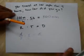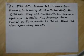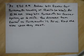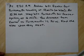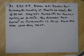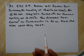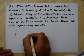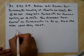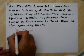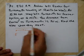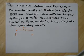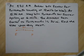Let's do some of these problems. At 9:30 a.m., Andrew left Exeter for Portsmouth traveling at 12 miles an hour. At 10 a.m., Stacey left Portsmouth for Exeter cycling at 16 miles per hour. The distance from Exeter to Portsmouth is 20 miles. I advise you to set up a chart and see if you can fill some stuff in, then we'll talk about it.